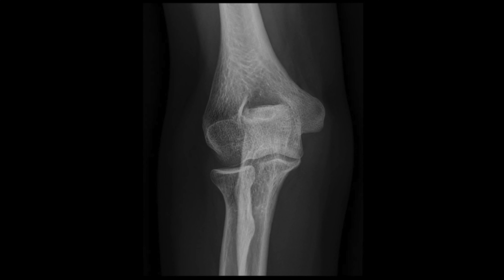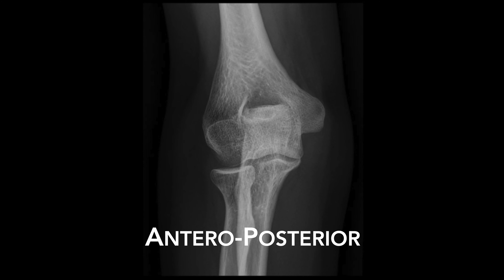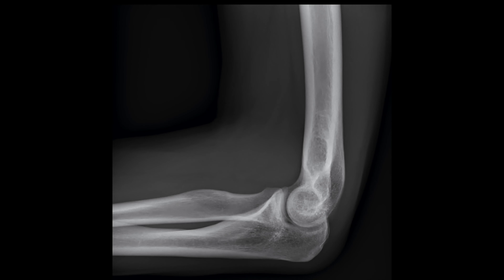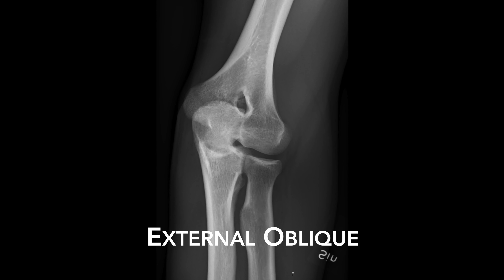The most common elbow radiographic positions are anterior-posterior in full extension, lateral, and then external oblique in some institutions, which provides really good views of the radial head.